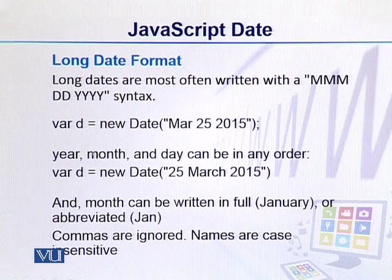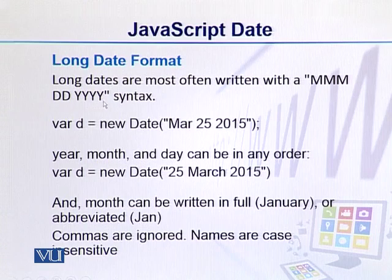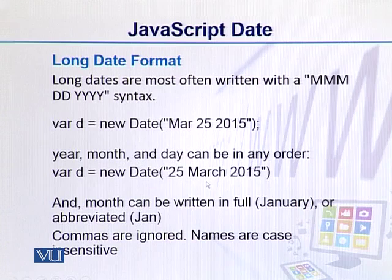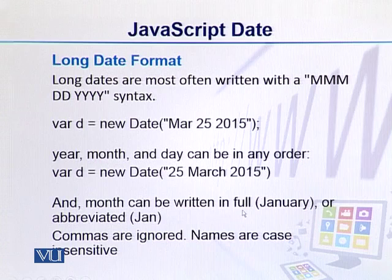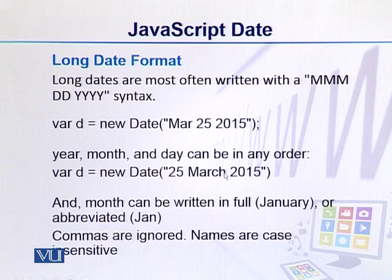Then we have the long date format. In long format, we mention the month first, then date, then year. We have the flexibility to mention the date before or after the month. It also allows us to use the full name of the month, like January, or an abbreviated form. Commas and extra spaces will be ignored, and it is case-insensitive, so any casing will be considered as a standard month.